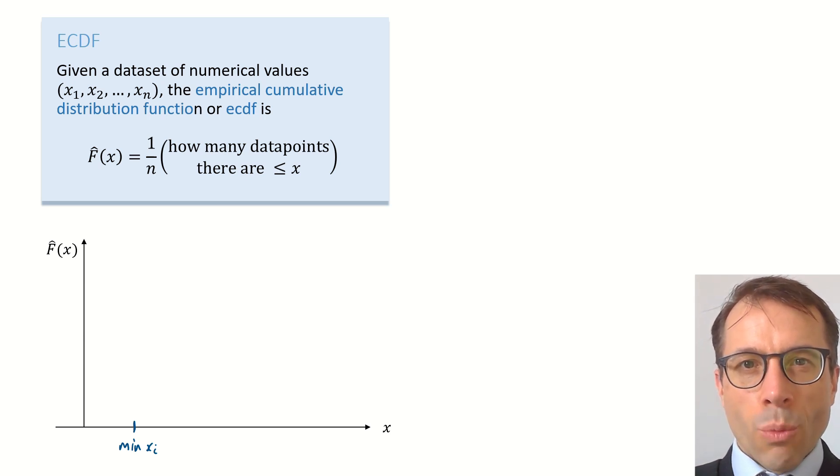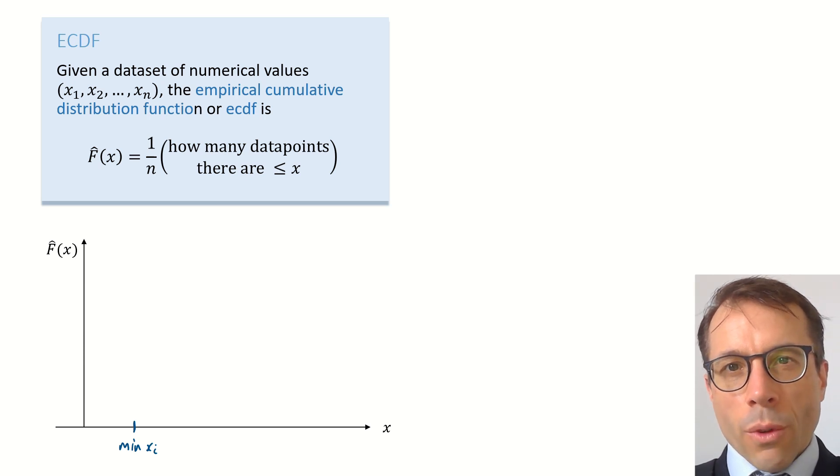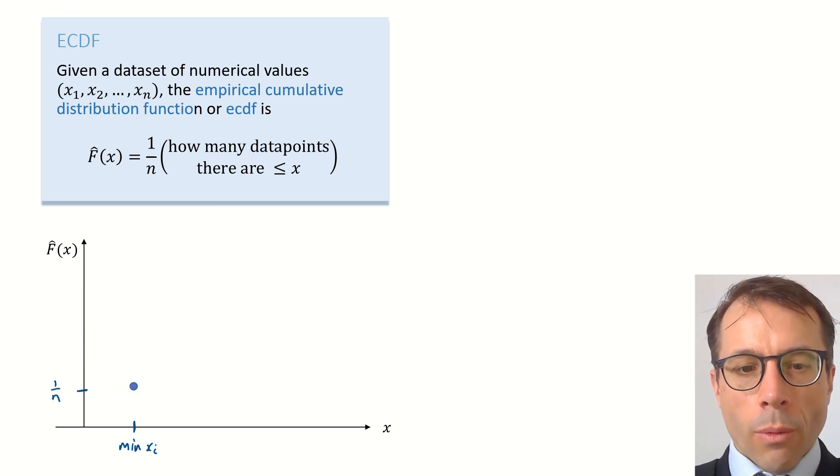Well, the dataset only has one item less than or equal to the smallest, namely the smallest item itself. Let's assume for the time being that there are no duplicates. Once we've gone through all this, it'll be easy to see what to do with duplicates. Okay, so f-hat of x must be 1 on n for this x value, because there's only one relevant data point.